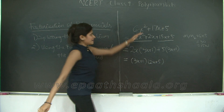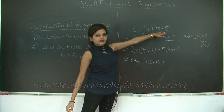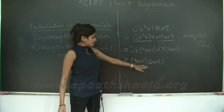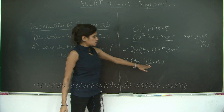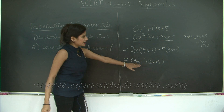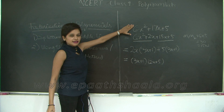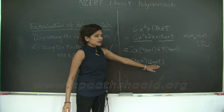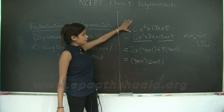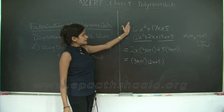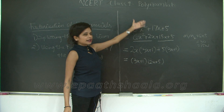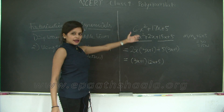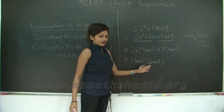Thus we have factorized 6x squared plus 17x plus 5 as a product of two factors: (3x plus 1) and (2x plus 5). So 3x plus 1 is a factor of 6x squared plus 17x plus 5, as well as 2x plus 5 is a factor of this polynomial. Or vice versa, 6x squared plus 17x plus 5 is a multiple of both 3x plus 1 and 2x plus 5.